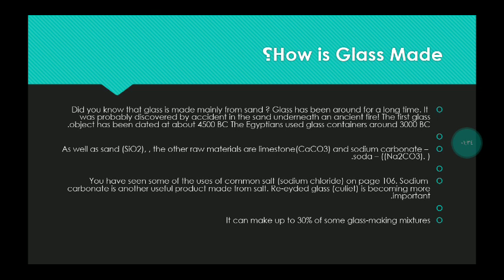As well as sand (SiO2), the other raw materials are limestone (CaCO3) and sodium carbonate (Na2CO3). You have seen some of the uses of common salt, sodium chloride, on page 106. Sodium carbonate is another useful product. Recycled glass is becoming more important — it can make up to 30% of some glass-making mixtures.